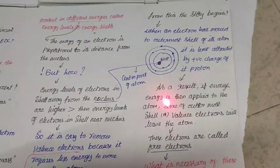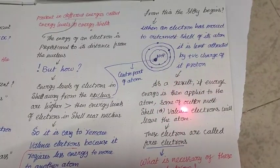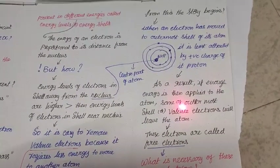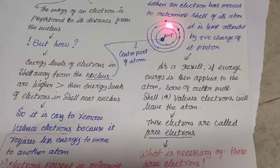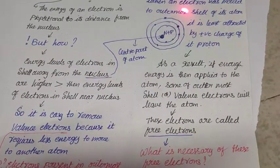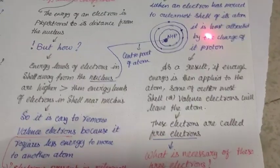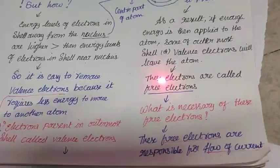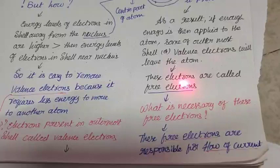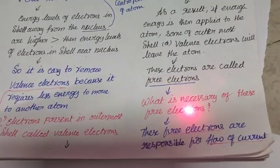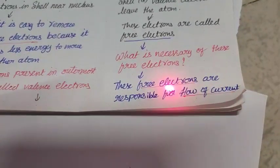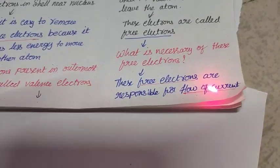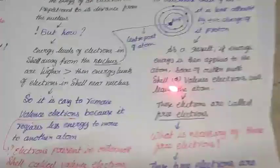The nucleus is circulated by the shells. In these shells, electrons will be present. This is the first shell, second shell, that is the third shell, which is the outermost shell we have. As I said, electron in the outermost shell is less attracted by its proton. As a result, if enough energy is applied to the atom, some outermost shell or valence electrons will leave the atom. These electrons are called free electrons. We have to remember an important point: electron does not travel on its own. If you apply some energy to the outermost shell of electrons, they will only leave that atom and travel to another atom.